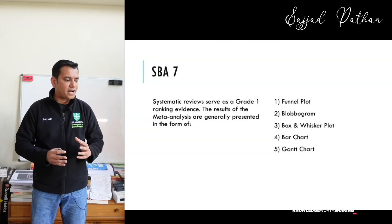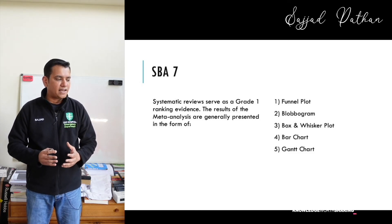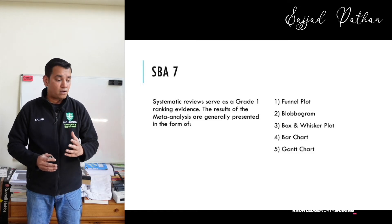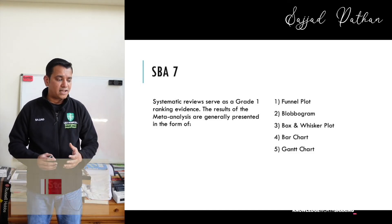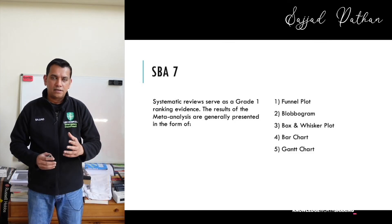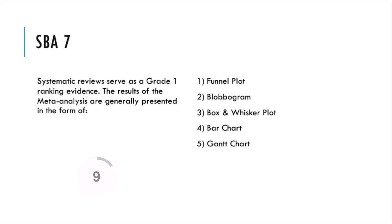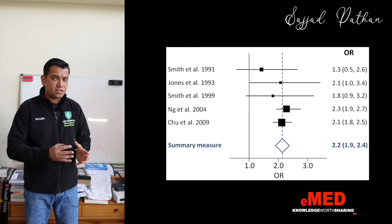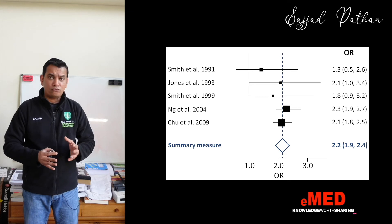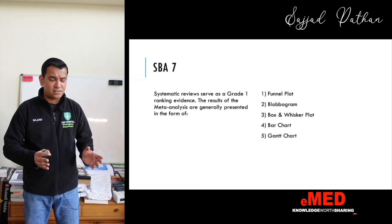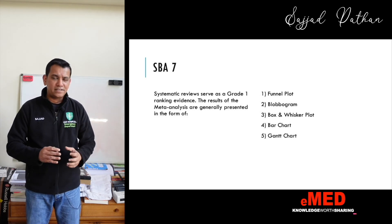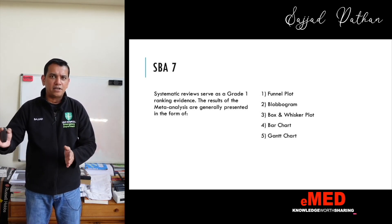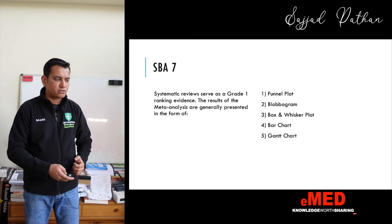Systematic review serves as grade one ranking evidence. The results of meta-analysis are generally presented in the form of: funnel plot, blobogram, box and whisker plot, bar chart, or Gantt chart? The answer is blobogram — also called a forest plot. Box and whisker plot shows confidence intervals but is not used here. Gantt chart is used in quality improvement projects to show a timeline of events.